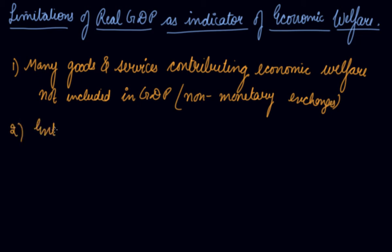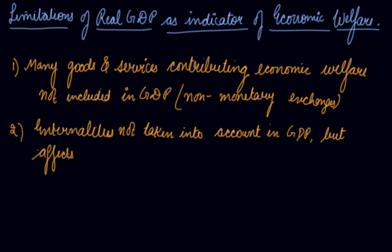Number two is externalities not taken into account in GDP but affects the welfare. When you have unilateral payments, that is the transfer payments, you get gifts, grants, aids. These are the transfer payments you do not take into consideration when you calculate your national income or GDP, but these are somehow helping in the welfare of the economy. So this is the second limitation of the GDP indicator.